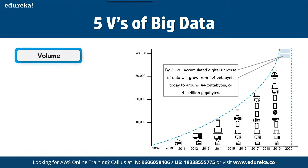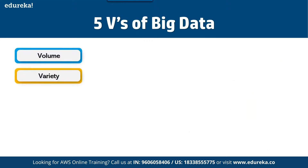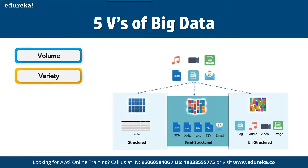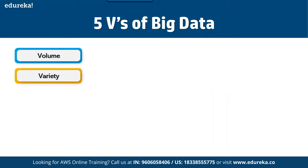The next V is Variety. We have different kinds of data being generated from different sources — structured data, relational, semi-structured, and unstructured. We have so many types of different data, and we have a big requirement where we need to accumulate and work on data as per different use cases.